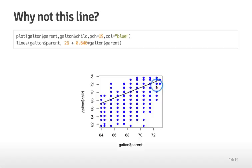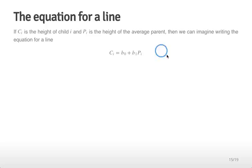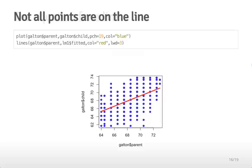A natural question is: why use that particular line? The reason is very similar to why we use the average to summarize the distribution. From geometry, the equation for a line relating child's height to parent's height is: child's height equals an intercept term plus a slope times the parent height. This would be exact if all points fell on the line, but of course they don't — there is variation around the line.